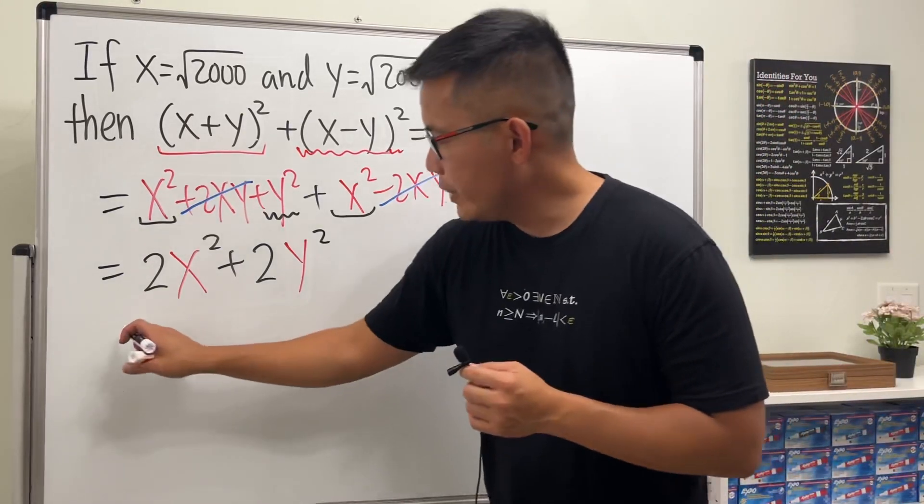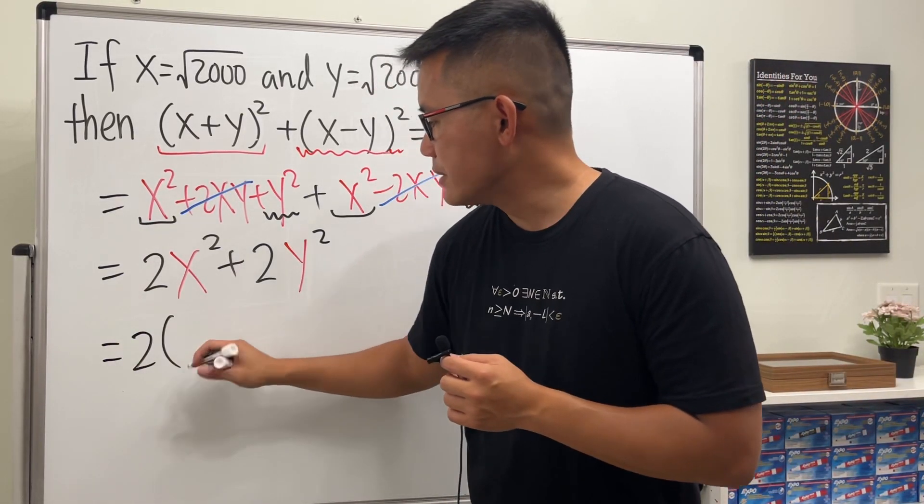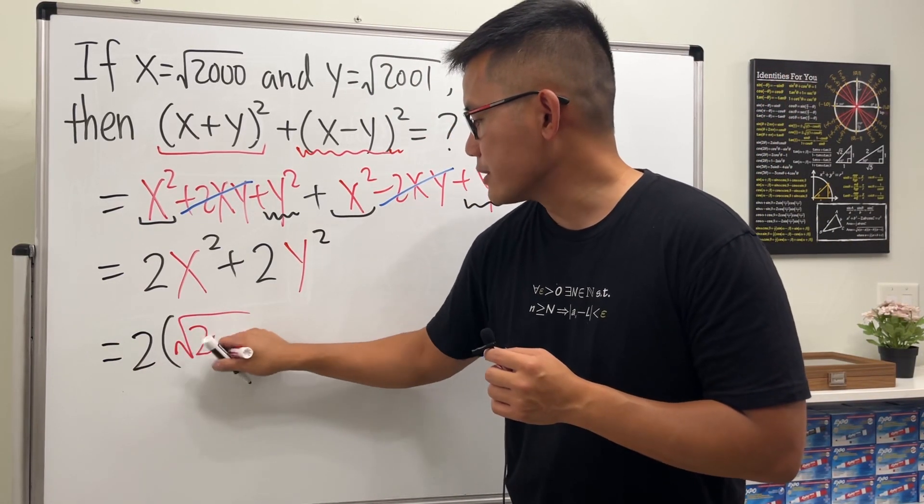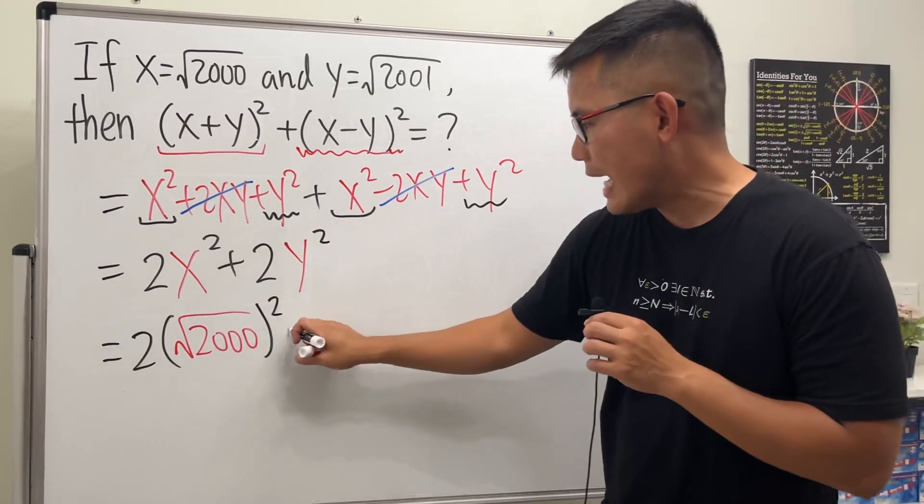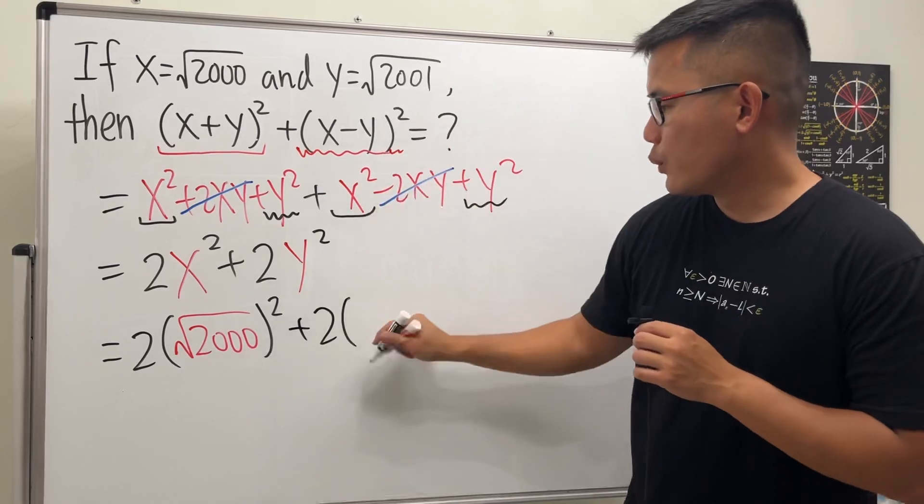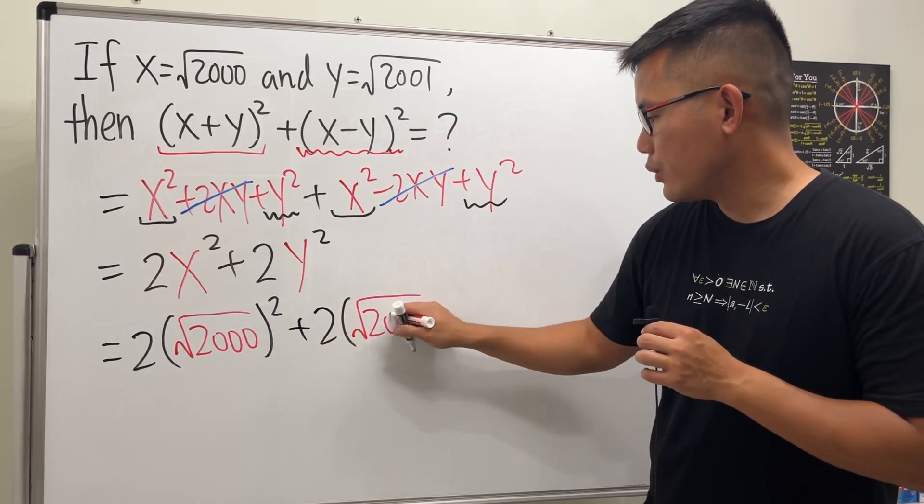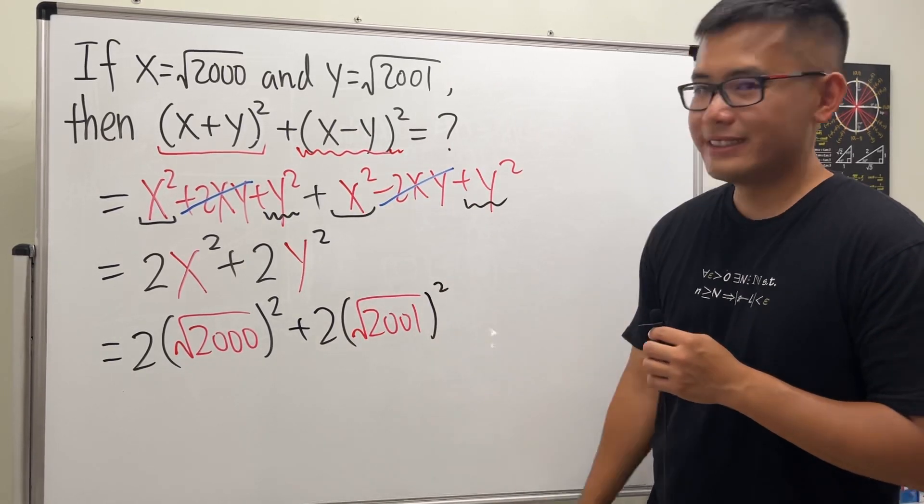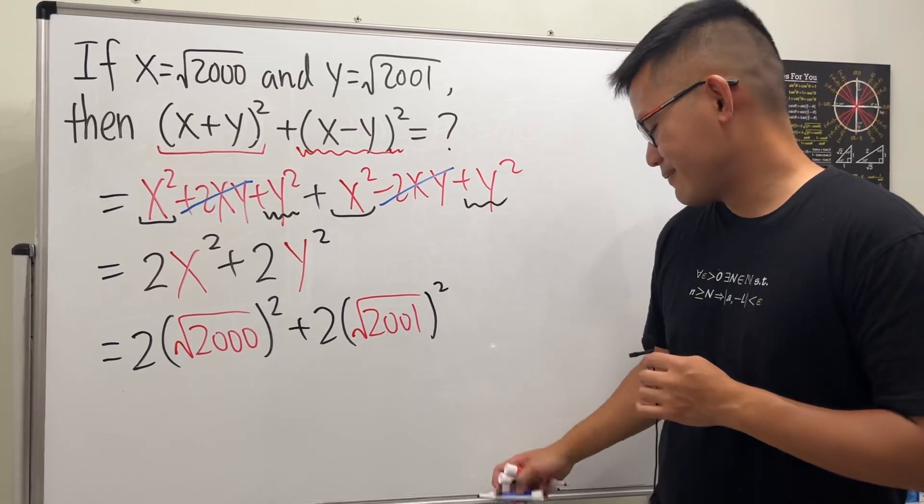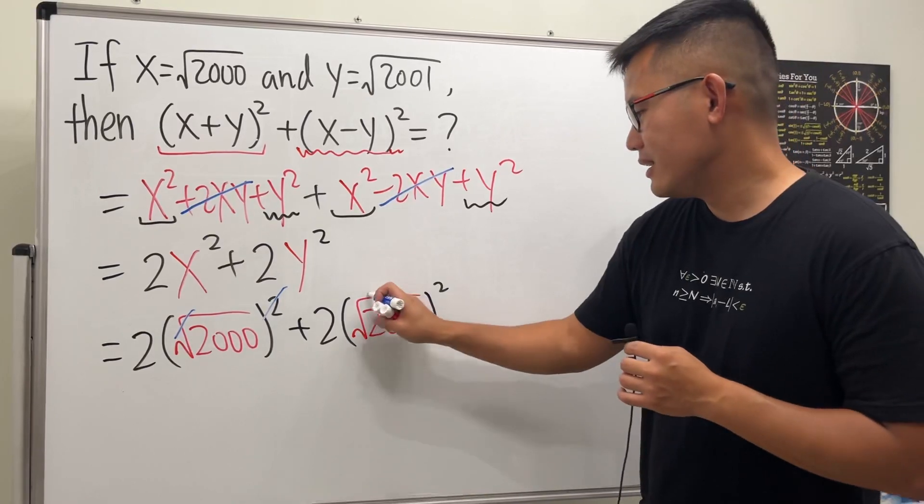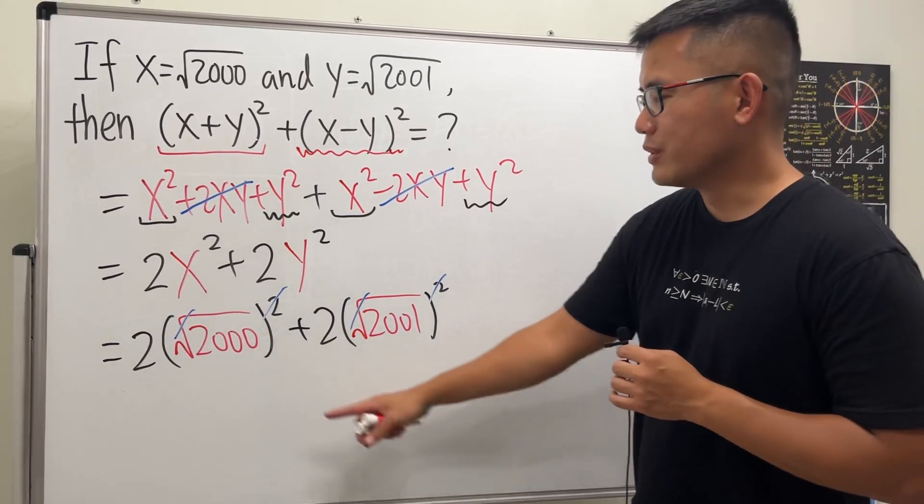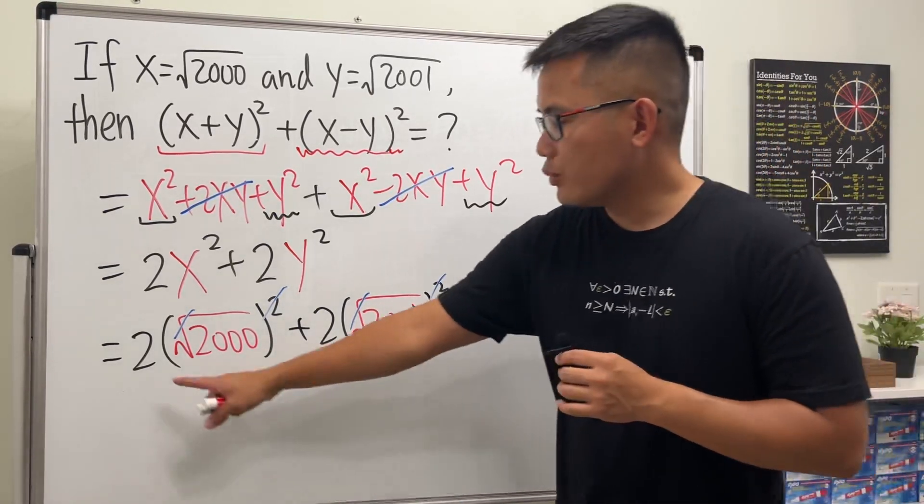Now plug in the square root numbers. We have 2 times the square root of 2000 squared, then we add 2 times y, which is the square root of 2001, and then square. The beauty of this is that square root and square cancel nicely. This and that cancel nicely - we'll just get the inside back.